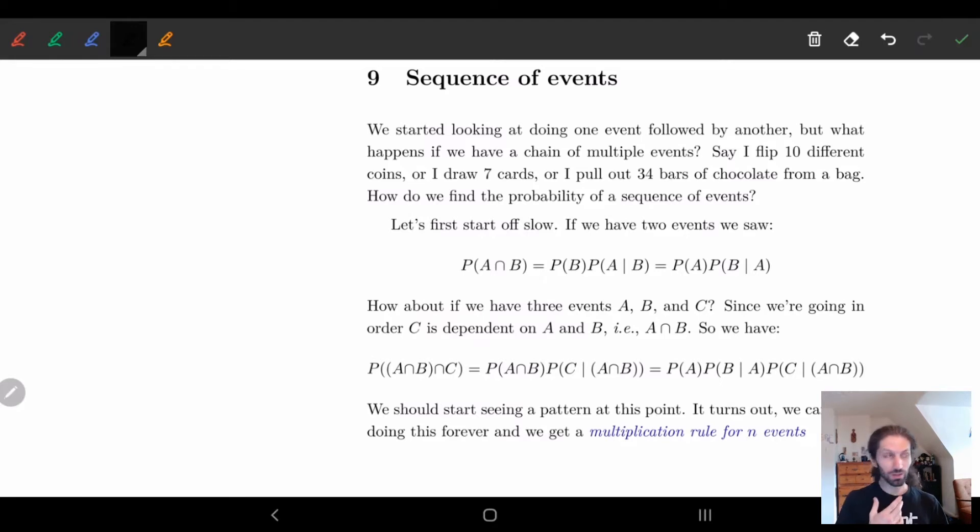In the last few videos we've been talking about basically two sequences of events. We choose a bag and then we choose chocolate, or we flip a coin and then we flip another coin, or we have exam one and then we have a second exam.